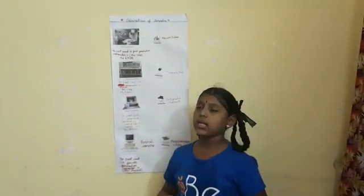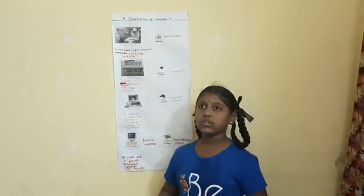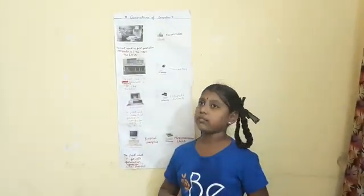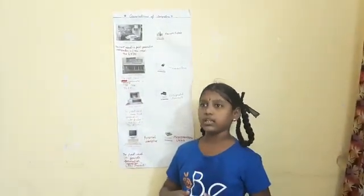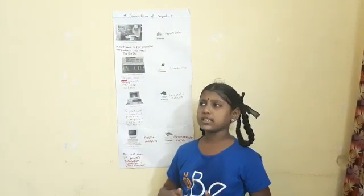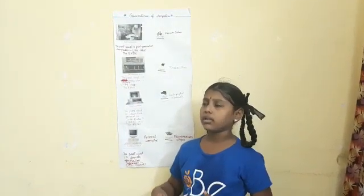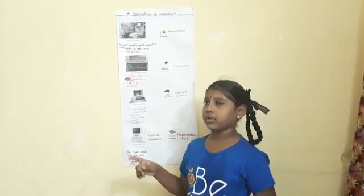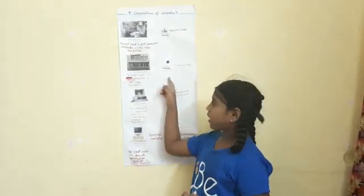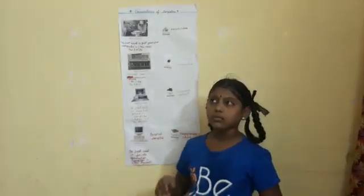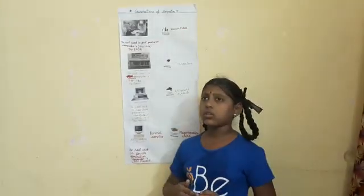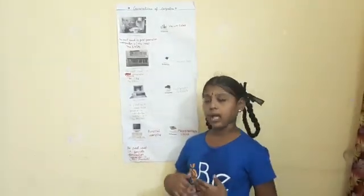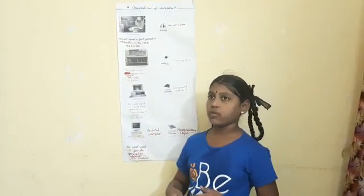2nd generation computers. The 2nd generation computers time period is 1959 to 1964. The part used in 2nd generation computers is transistors. It is also called as RC501.